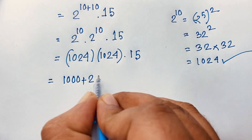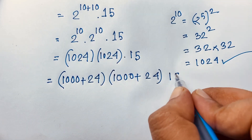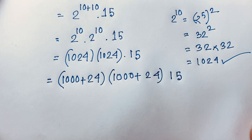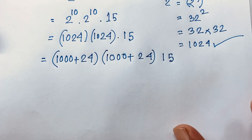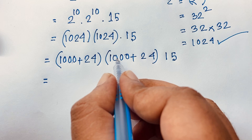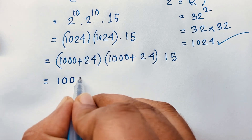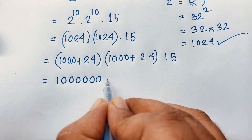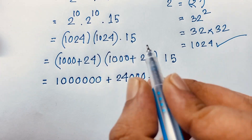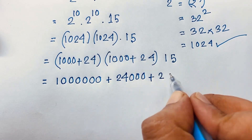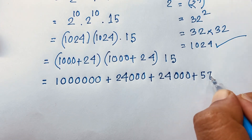Now how to evaluate 1024 times 1024 times 15 without a calculator. We write 1024 as (1000 plus 24), so 1024 times 1024 equals (1000 plus 24) times (1000 plus 24). Expanding: 1000 times 1000 equals 1,000,000; plus 24 times 1000 equals 24,000; plus 24 times 1000 equals another 24,000; plus 24 times 24 equals 576.